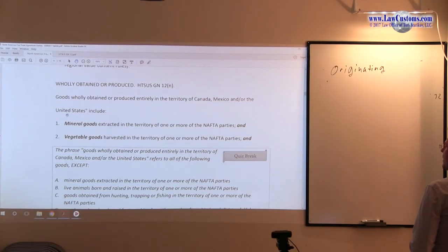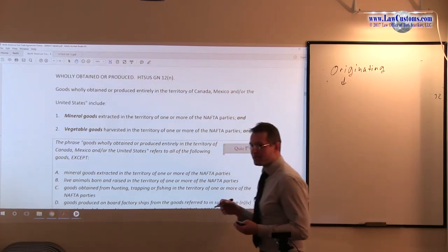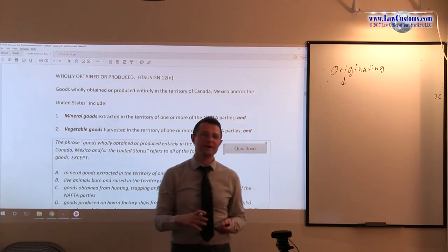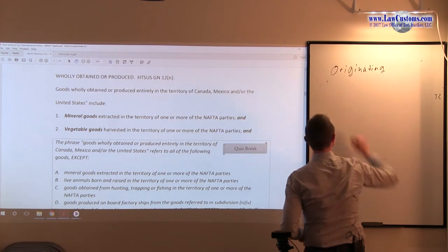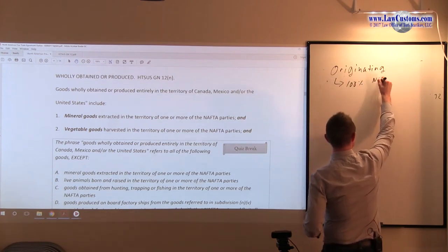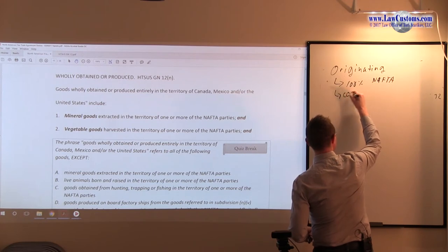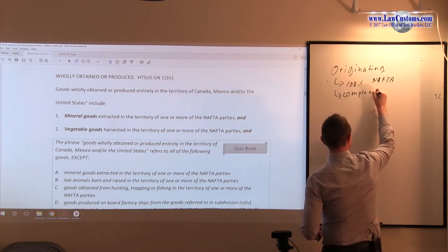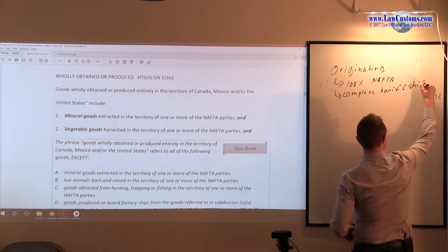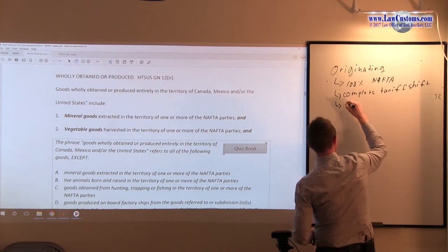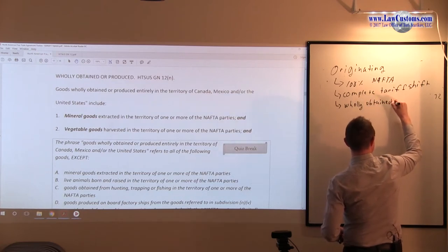So now we are back to the whole octane of produce. To qualify as originating, we know it must either be completely born and raised, completely manufactured from all the materials, so 100% NAFTA or complete third shift, or must be wholly obtained and produced.